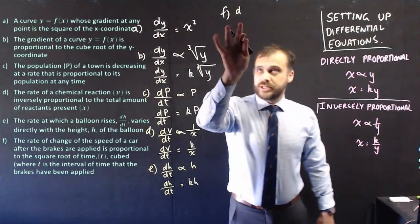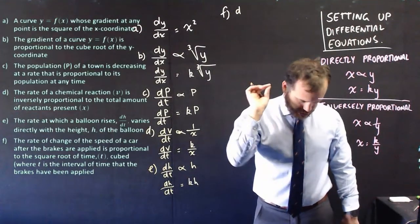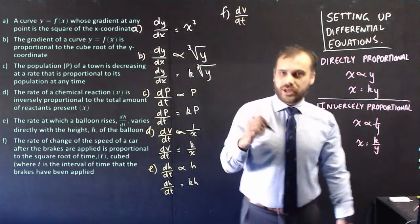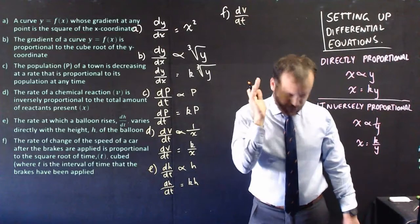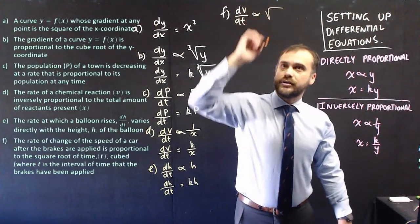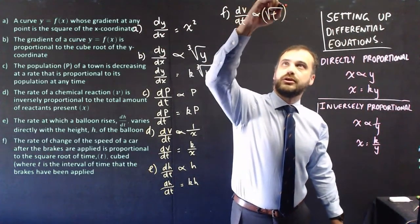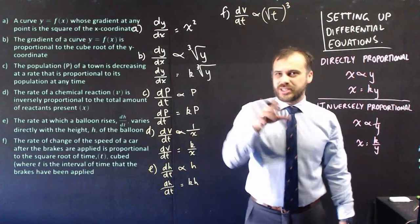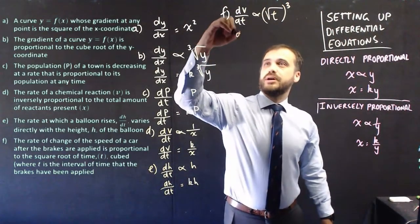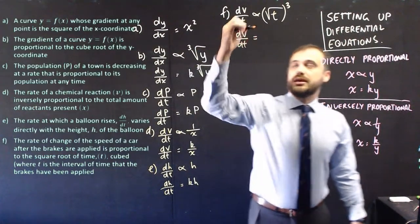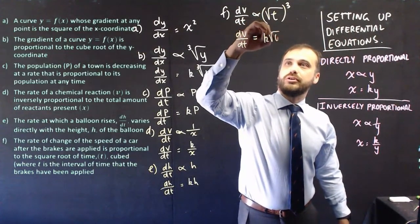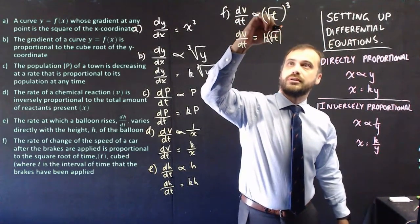All right, last one here, and I've already gotten myself started. The rate of change of the speed of a car. So the velocity with respect to time, it is proportional to the square root of time cubed. All right, so you need to be really careful when you read that question. The square root of time cubed. Now, when we go through this one, we can now write dv dt equals, and then it's directly proportional, so we get a nice little k here, square root of t cubed.